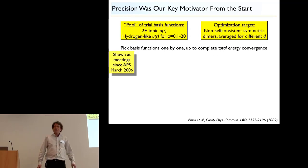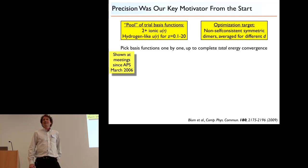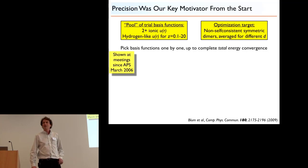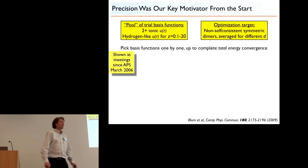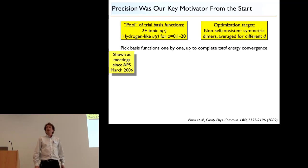I've shown slides like this for a long time. Since the basis sets came up before, I'll say a little bit more about this. This was shown in a similar variant already at the APS March meeting in 2006, when I talked about numeric atom-centered orbitals for the first time — at least Don was in the audience at the time. The construction of these basis sets cost me a little bit of thought for a while, and eventually it became a very simple exercise to create a library.